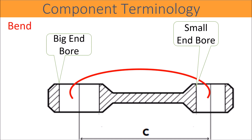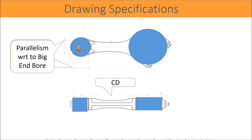Twist: the parallelism between the big end hole axis and small end hole axis is called the twist of the connecting rod. The direction of the parallelism is important for the twist. Parallelism measured in the working plane ZX plane is called bend; parallelism measured in the working plane YZ plane is called twist. Both parallelisms are measured of the small end diameter with respect to the axis of big end diameter as datum, as symbolically shown in the drawing. Center distance is the distance between big end and small end diameters.